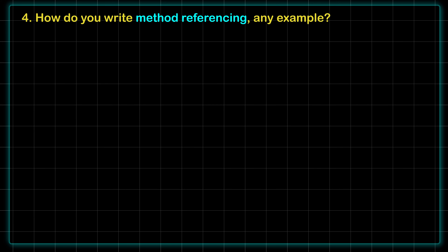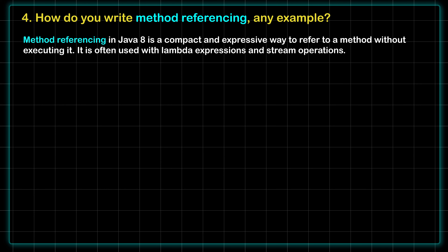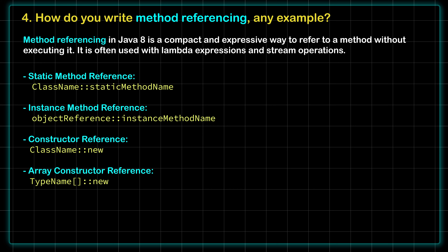Moving on to the fourth question: how do you write method referencing? Can you give any example? This question is again from Java 8. Method referencing in Java 8 is a compact and expressive way to refer to a method without executing it. It is often used with lambda expressions and stream operations. Some examples of method referencing are: static method reference, instance method reference, constructor reference, and array constructor reference — these are the different types of method referencing in Java 8.